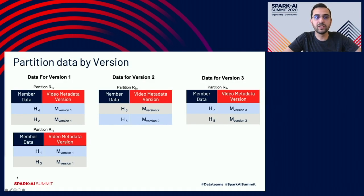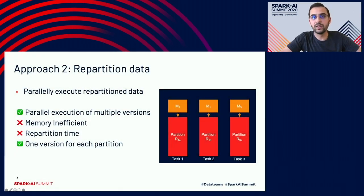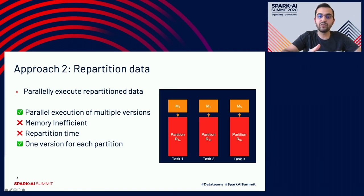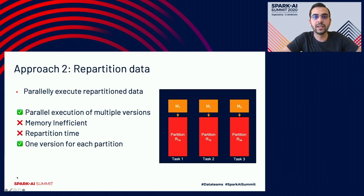Let's try repartitioning by version. Version one is split into two partitions R1a and R1b; version two into R2a, and so on. With closure applied after repartitioning, task 1 and task 2 work on R1a and R1b and both access M1, while task 3 accesses M3. However, we are still consuming 30 GB because M1 is replicated twice. On top of that, repartitioning is slow and we're paying an extra penalty for it. The positive: we've stopped switching between versions within the same partition.